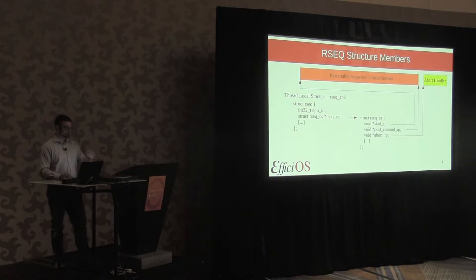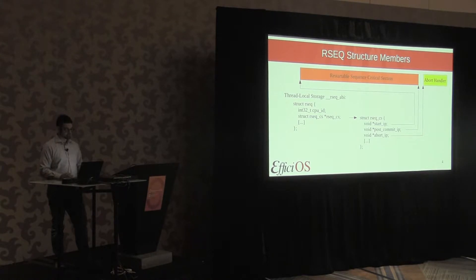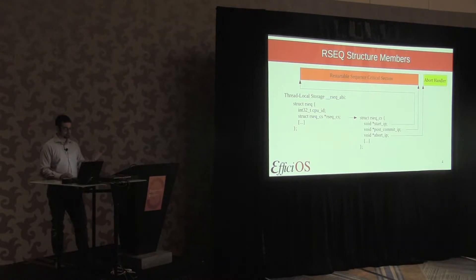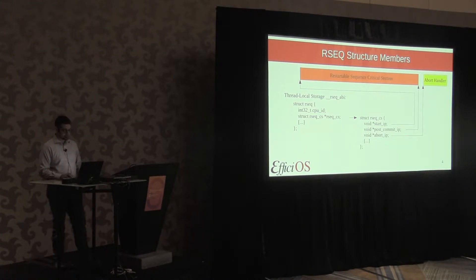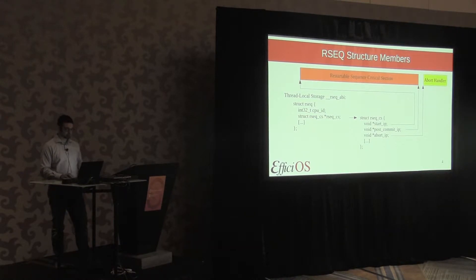When user space code is not in a critical section, that pointer is null. When entering the critical section, the first instruction stores the value to the rseq_cs pointer — a descriptor of the current critical section — which consists of three things: the start instruction pointer, the post-commit instruction pointer (actually a post-commit offset from the start IP in the current implementation), and the abort IP, which is where the kernel should move execution if it preempts the critical section or delivers a signal over it.